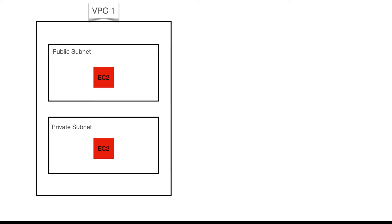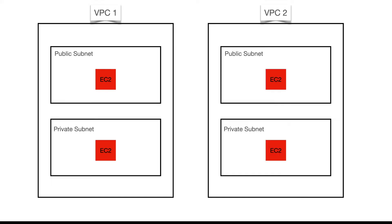VPC1 will have two subnets — one private subnet and one public subnet — with one EC2 instance in each. Similarly, VPC2 will have the same structure: one public subnet, one private subnet, and one EC2 in each. We'll have an internet gateway so that the public subnet in each VPC can talk to the internet through IGW.